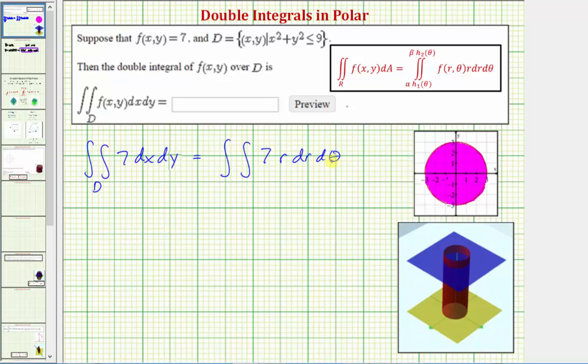Now we need to find new limits of integration for r and then theta. So looking at the region of integration, notice how r would start at zero and go out to three. So limits of integration for r are from zero to three. And then to trace out this area, we have to rotate one full revolution, which means theta would be from zero to two pi radians.